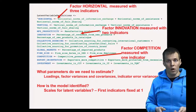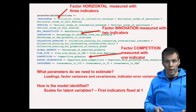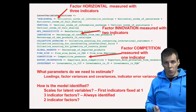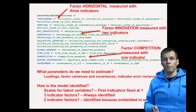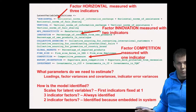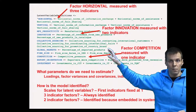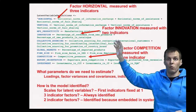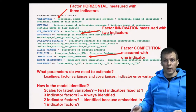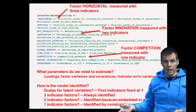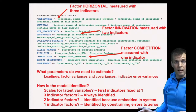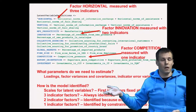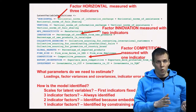We also need to consider how the 3, 2, and 1 indicator rules are applied. Three-indicator factors are always identified. Two-indicator factors are identified because they are embedded in a larger system of factors — we can use information from other factors to identify those loadings, so we don't have to do anything special. For single-indicator factors, we fix the error variances to be zero, meaning those indicators are treated as perfectly reliable.